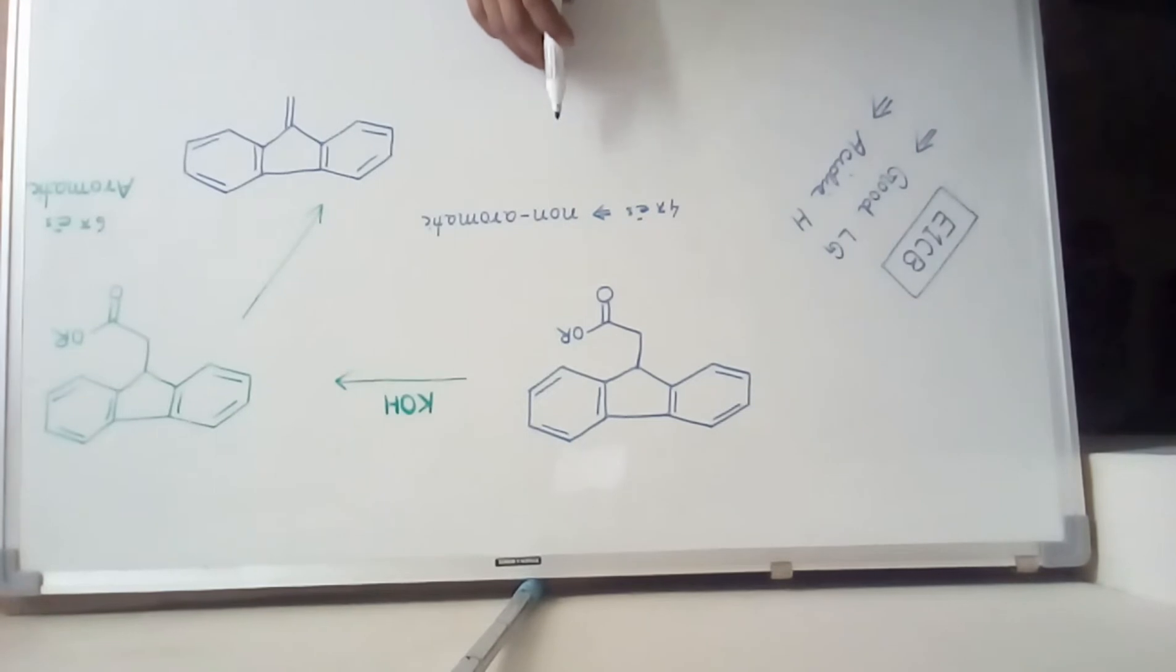It is an example of E1CB reaction. An E1CB reaction can be easily identified by the presence of a good leaving group and also by presence of an acidic hydrogen.